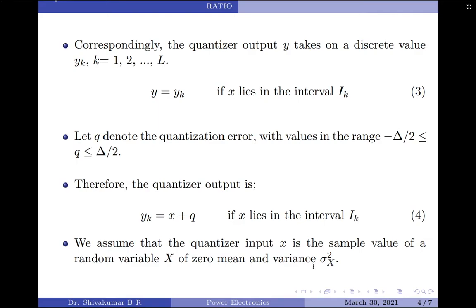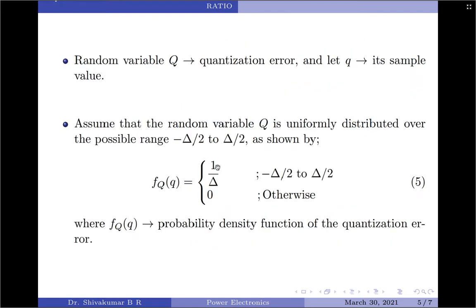Let the random variable capital Q denote the quantization error, and let small q denote its sample value. Since the quantization error is uniformly distributed, the probability density function of the quantization error is given by equation 5: f_Q(q) equals 1 divided by delta over the interval minus delta by 2 to plus delta by 2, and 0 otherwise.